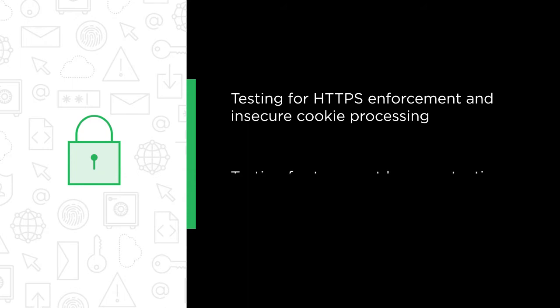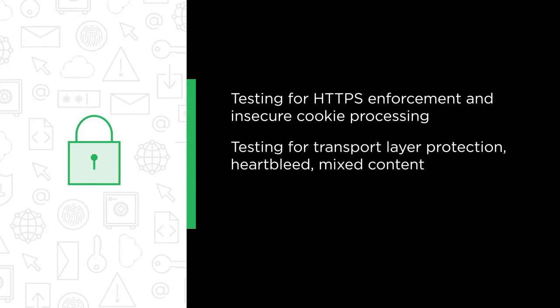Next, you will learn about transport layer protection, Heartbleed vulnerability, and mixed content vulnerability. I will show you how to check if transport layer protection is configured securely in your web application. I will present how an attacker can read sensitive data from the memory of the web server as a result of Heartbleed vulnerability, which is one of the most famous vulnerabilities in crypto libraries. And I will explain what dangerous consequences can happen when there is mixed content vulnerability in your web application.